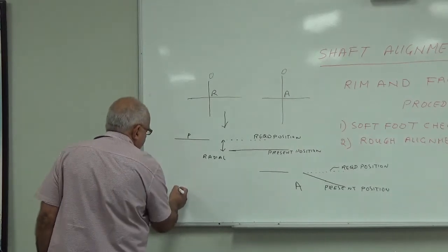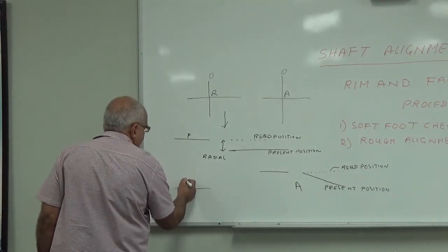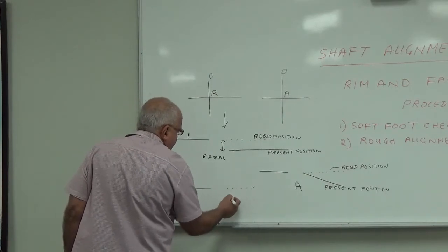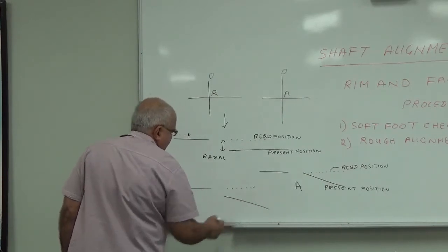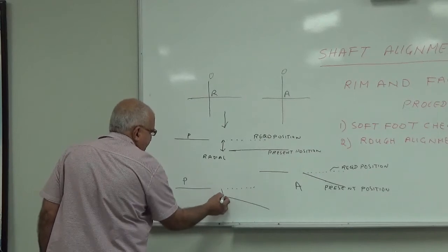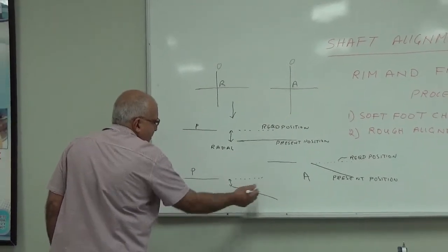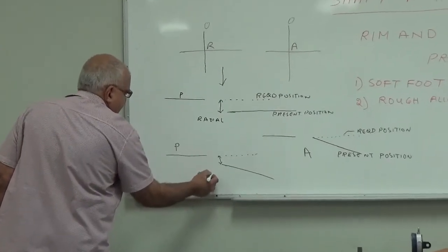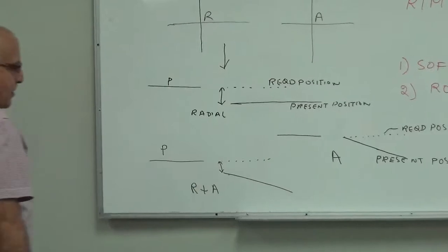So together, your shaft is now in this case like this. It is down and also it is making an angular misalignment. So this is called radial plus angular.